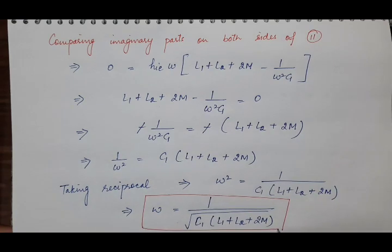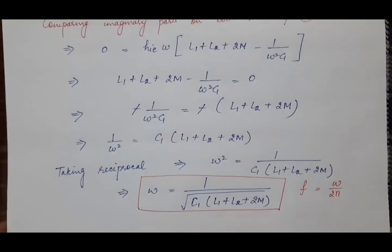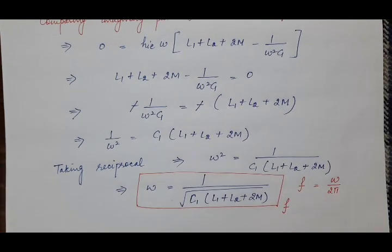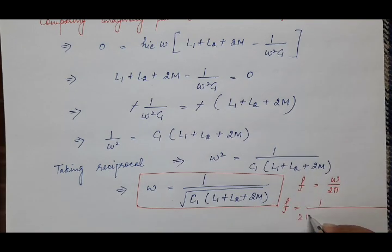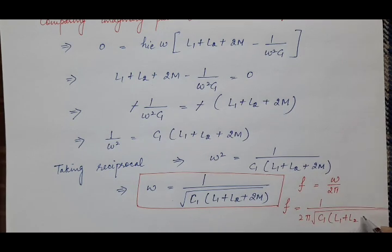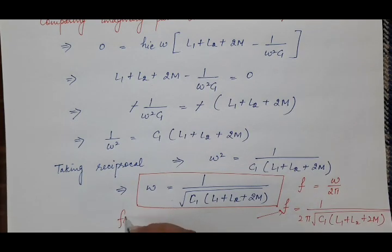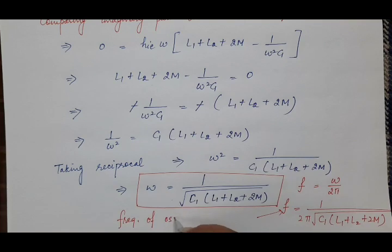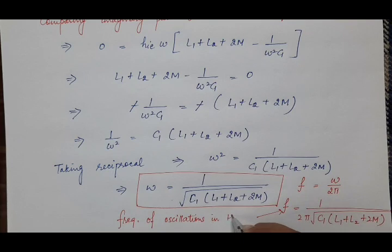To calculate the frequency of oscillations f, we use f = ω/(2π), giving f = 1 / (2π·√[C1·(L1 + L2 + 2M)]). This is the frequency of oscillations produced in the Hartley oscillator.